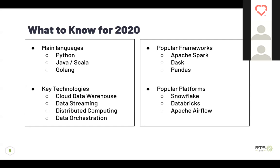Some key technologies coming up or that will continue to be big within data engineering: first is the cloud data warehouse — basically a central repository to store all of your information. Companies are taking advantage of products such as Snowflake or Redshift on AWS to store massive amounts of data and run queries against it, instead of hosting that on a physical server. Data warehousing is not going to die — it's just going to be reborn into something different.